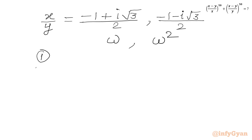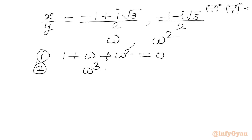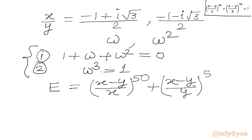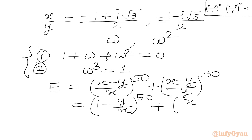We have two key properties of omega: the first is 1 plus omega plus omega squared equals 0, and the second is omega cubed equals 1. Using these two properties we can find our required expression. We write expression E equal to (x minus y)/x whole power 50 plus (x minus y)/y whole power 50, which can be rewritten as (1 minus y/x)^50 plus (x/y minus 1)^50.